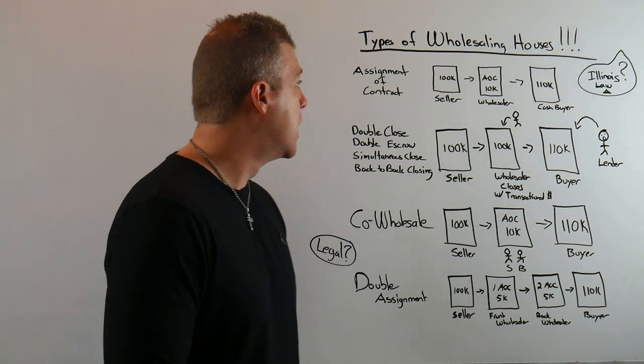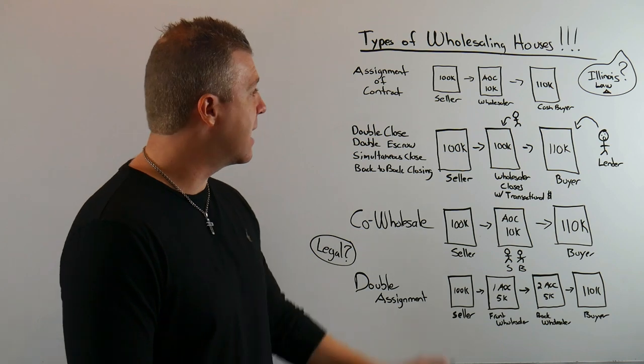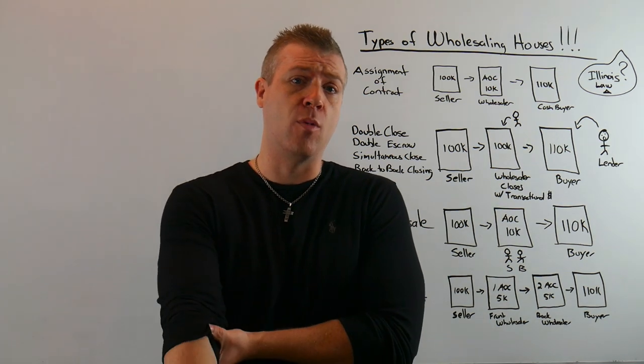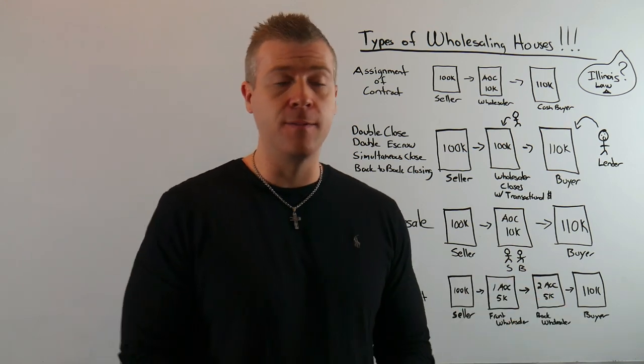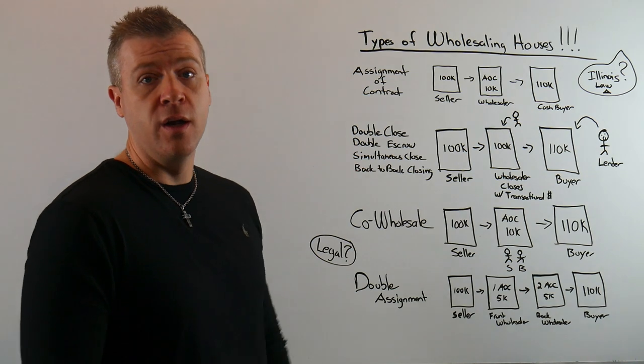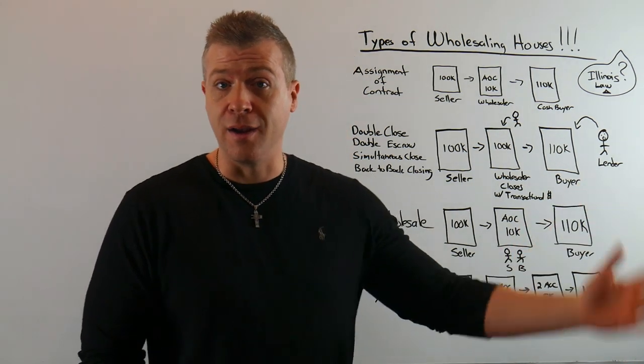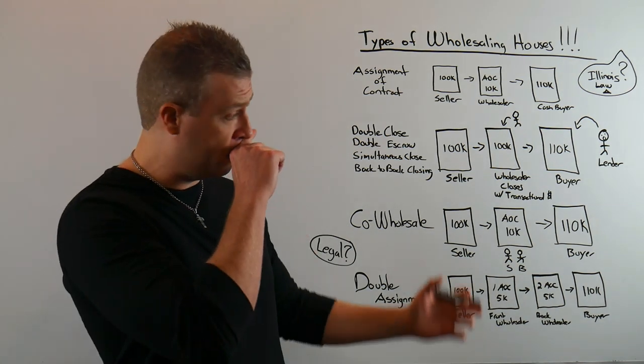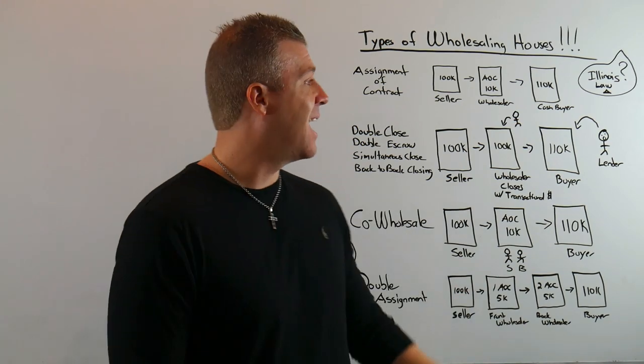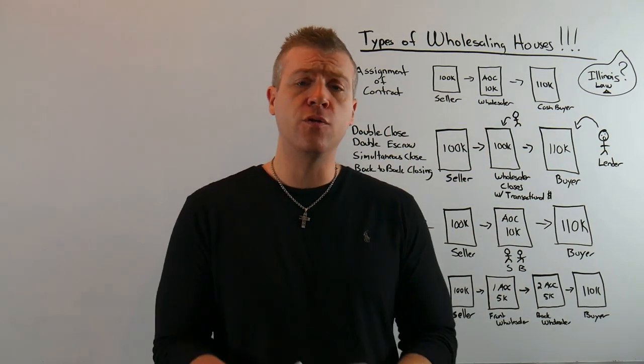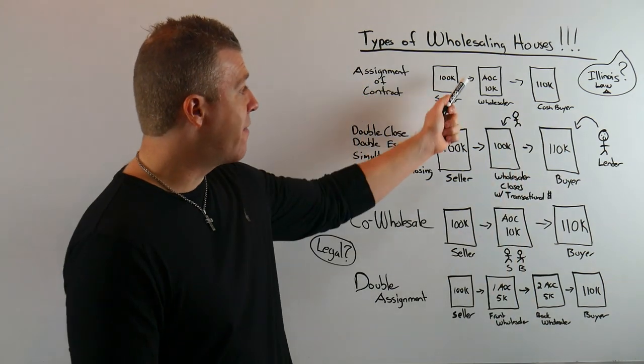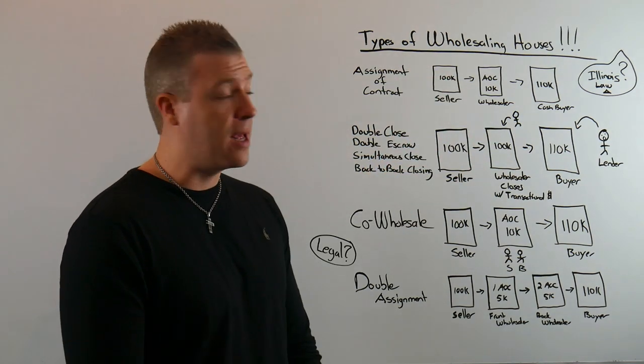The first and most common one is the easiest barrier to entry - the assignment of contract. We're going to market for a house that needs to be fixed up or that we can get at a discount or wholesale price. Let's say this is the seller, you're the wholesaler, and this is the back-end cash buyer. You, the wholesaler, market to the seller depending on whatever strategy you're doing - bandit signs, cold calling, direct marketing, whatever it is. This seller is going to sell the house to you for $100,000. That's going to leave you room to make a $10,000 assignment fee.